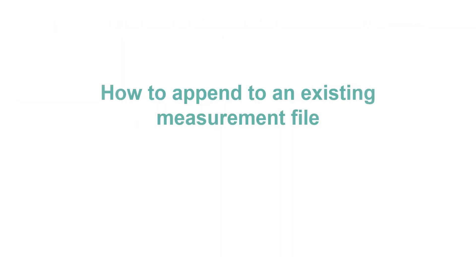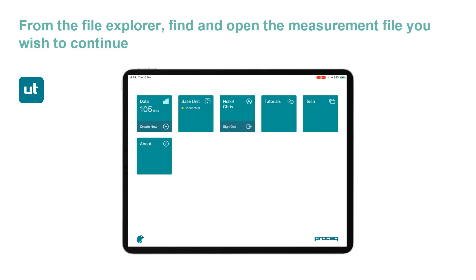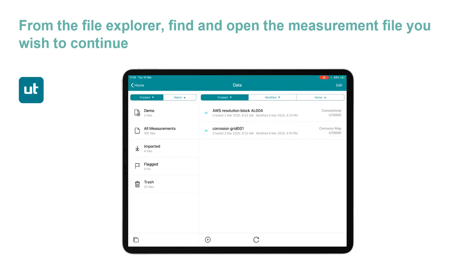Now I'm going to show you how to append an existing measurement file. Say I've started a measurement and wish to continue maybe the next day or the next shift. What we do is go to the file explorer and open the measurement file that we wish to continue. The file explorer is found on the data tile — the first tile. Press the top half of that tile.